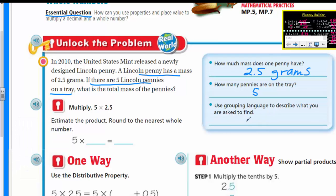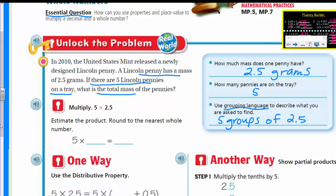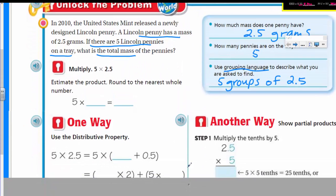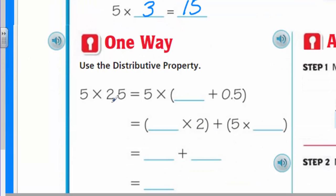And then finally, it says use grouping language to describe what you are asked to find. So this is the key here, the total mass. It's like we're saying, if you think about it, five groups. Five groups of the 2.5, which is the mass of each penny. And since we have five on there, that's what they mean by the grouping language. Well, multiply. And then it has here, it says 5 times 2.5. Estimate the product, round to the nearest whole number. All right. Well, we have the five here. They already filled that in for us. So 2.5 to the nearest whole number is going to be three. Remember, five or more, we up the score. Five must just love himself so much, right? He's like, I'm five. I'll tell you if you're going to go up or not. That gives us 15. So that's just our estimate.